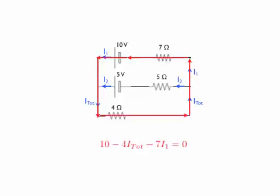Let me look first at the outside loop and write that loop equation. I'm going around this loop in the same direction as I guessed the current will flow. The 10-volt battery — I'm going through it from the minus side to the positive side, so that is positive 10 volts. Minus 4 times I-total is the voltage drop across the 4-ohm resistor. Minus 7 times I1 is the voltage drop across the 7-ohm resistor. Kirchhoff's law says that all of this has to add up to zero.